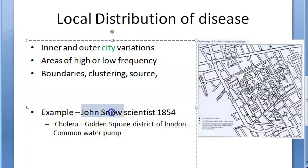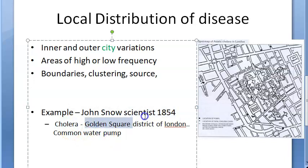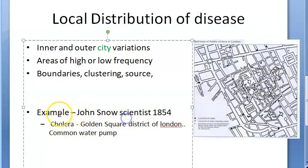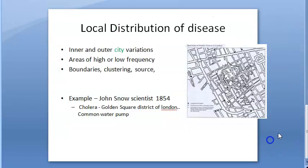The best example here is John Snow, the scientist, who in 1854 showed the cholera situation in the Golden Square district of London — there was a common water pump. This is local distribution of disease, and you can apply spot maps to so many diseases: yellow fever, AIDS, and many others, since it is an epidemiological study.